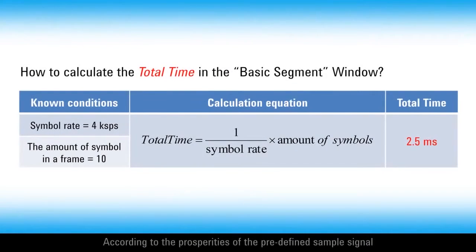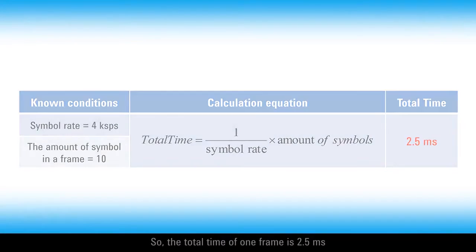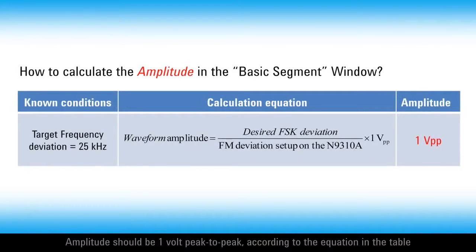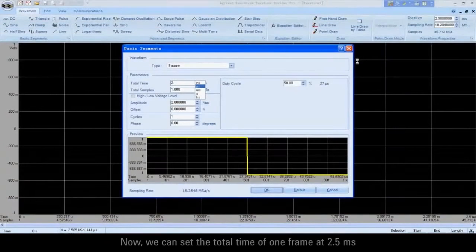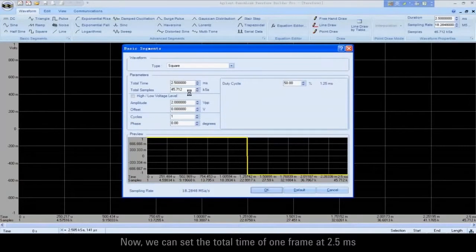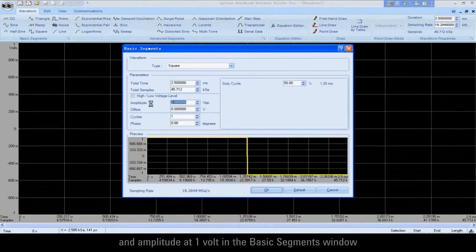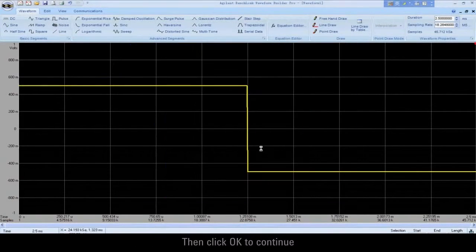We need to set up the total time and amplitude. According to the properties of the predefined sample signal, its symbol rate is 4K SPS, the amount of symbols is 10. So, the total time of one frame is 2.5 milliseconds. Amplitude should be 1 volt peak to peak according to the equation in the table. Now, we can set the total time of one frame at 2.5 milliseconds and amplitude at 1 volt in the basic segments window. Then click OK to continue.